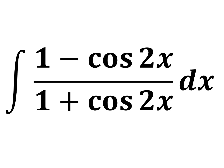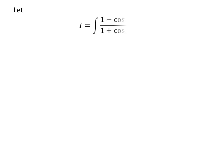In this video, we will solve the integral of (1 minus cosine of 2x) upon (1 plus cosine of 2x) with respect to x, by using simple trigonometry identities. Let I be equal to the integration of (1 minus cosine of 2x) upon (1 plus cosine of 2x) with respect to x.